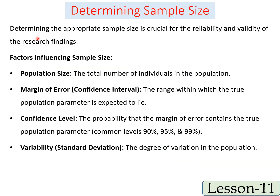Let us see how we determine the sample size. Determining the appropriate sample size is crucial for the reliability and validity of research findings. Factors to consider include: population size — the higher the population, the higher the sample size; margin of error or confidence interval — the range within which the true population parameter is expected to lie; and confidence level — common levels are 90%, 95%, and 99%. The higher the confidence level, the higher the sample size will be.